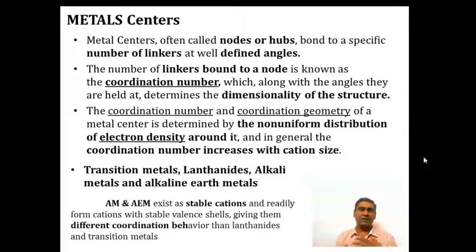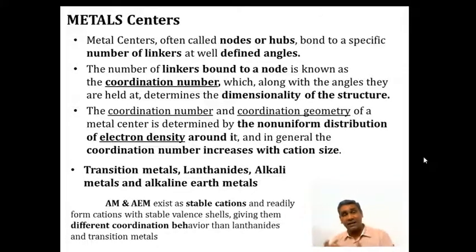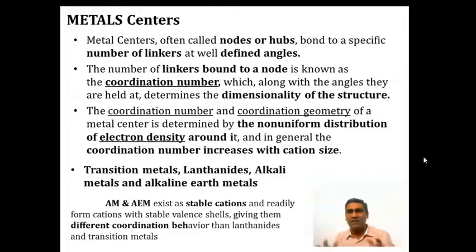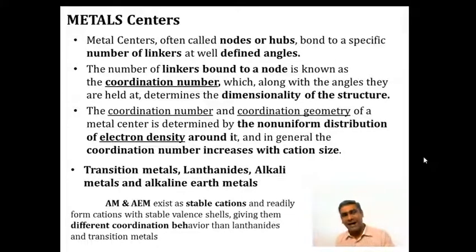We have different metals such as transition metals, lanthanides, alkali metals and alkaline earth metals. Alkali metals and alkaline earth metals exist as stable cations and readily form cations with stable valence shells, giving them different coordination behavior than lanthanides and transition metals.